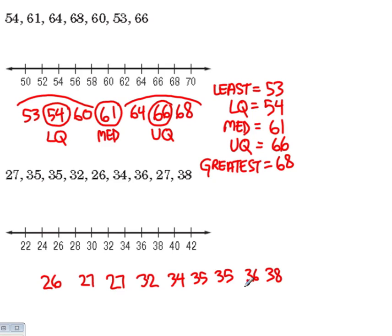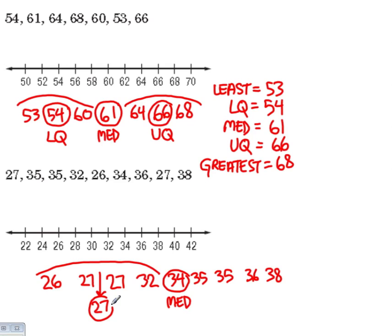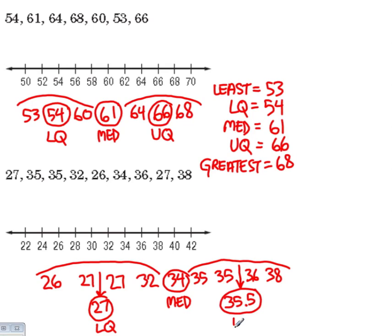Since I have 9 numbers, I know that the median is the fifth number, because I have 4 numbers on this side and 4 numbers on this side. Now I'm going to find the median of the bottom half — that would be a number between these two numbers, which in this case is very easy to see that it is 27. That's the lower quartile. And over here in the top half, it has to be a number between 35 and 36, relatively easy to see that it is 35.5. And this would be my upper quartile.